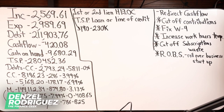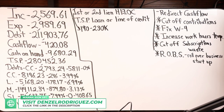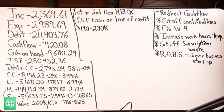On the board we have an individual BCE member making two thousand five hundred sixty nine dollars and sixty one cents a month. Their expenses are two thousand nine hundred eighty nine dollars and sixty nine cents — so they're already running negative. Total debt in this person's situation is two hundred eleven thousand nine hundred three dollars and seventy six cents. Negative cash flow: four hundred twenty dollars and eight cents.